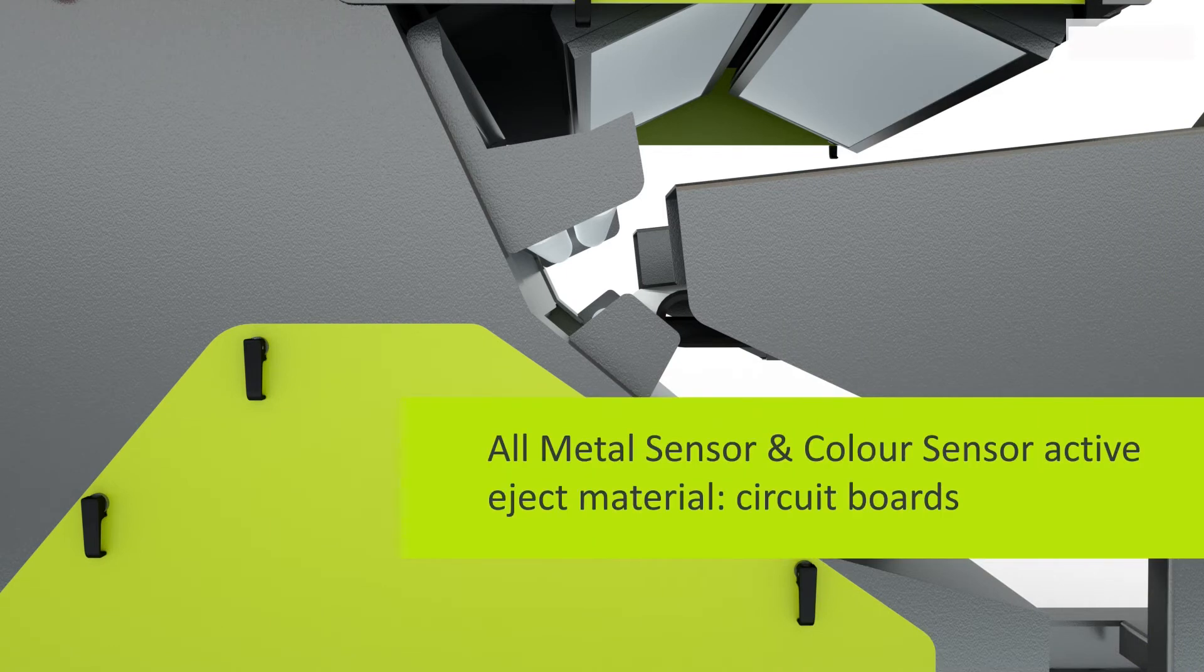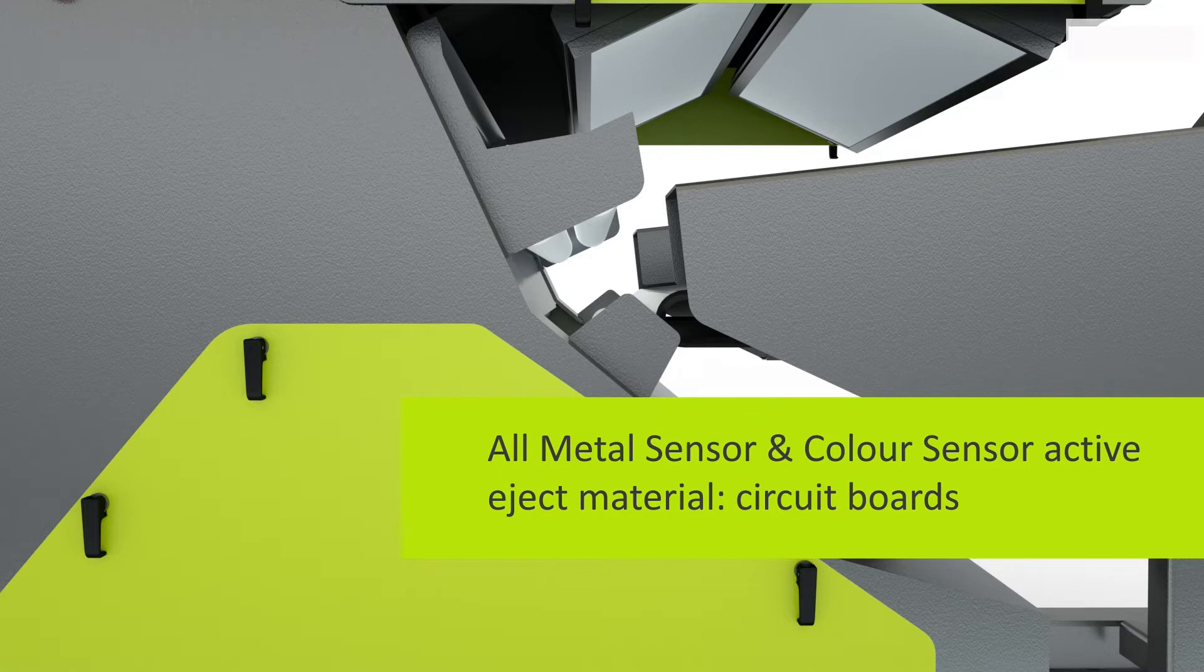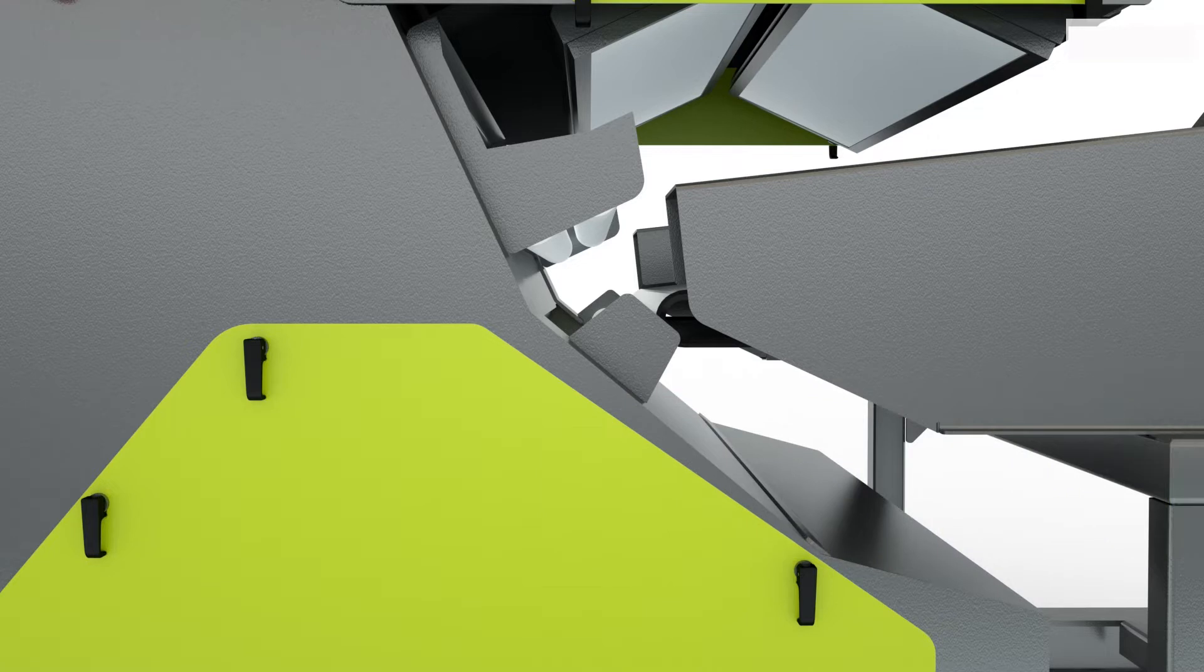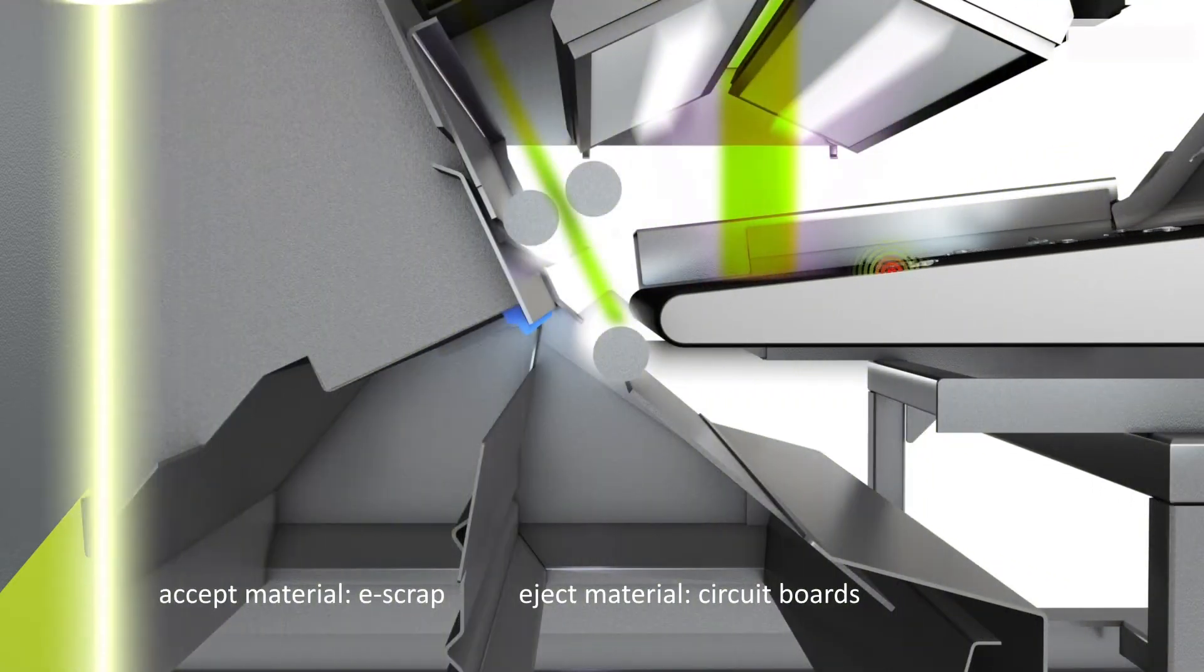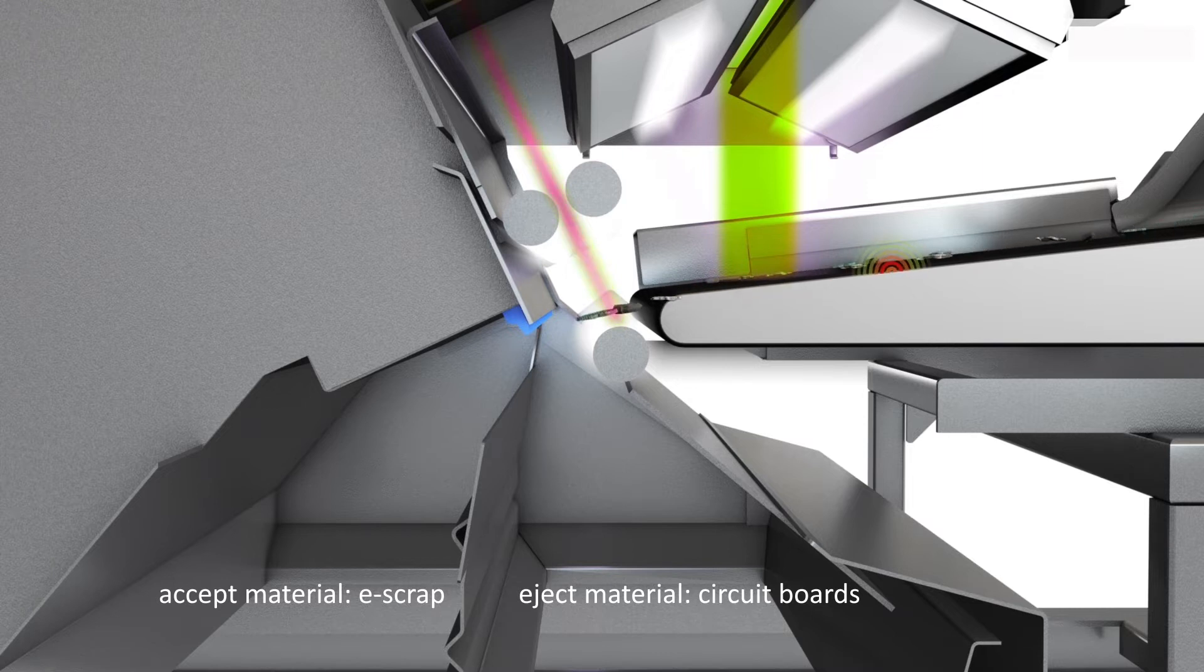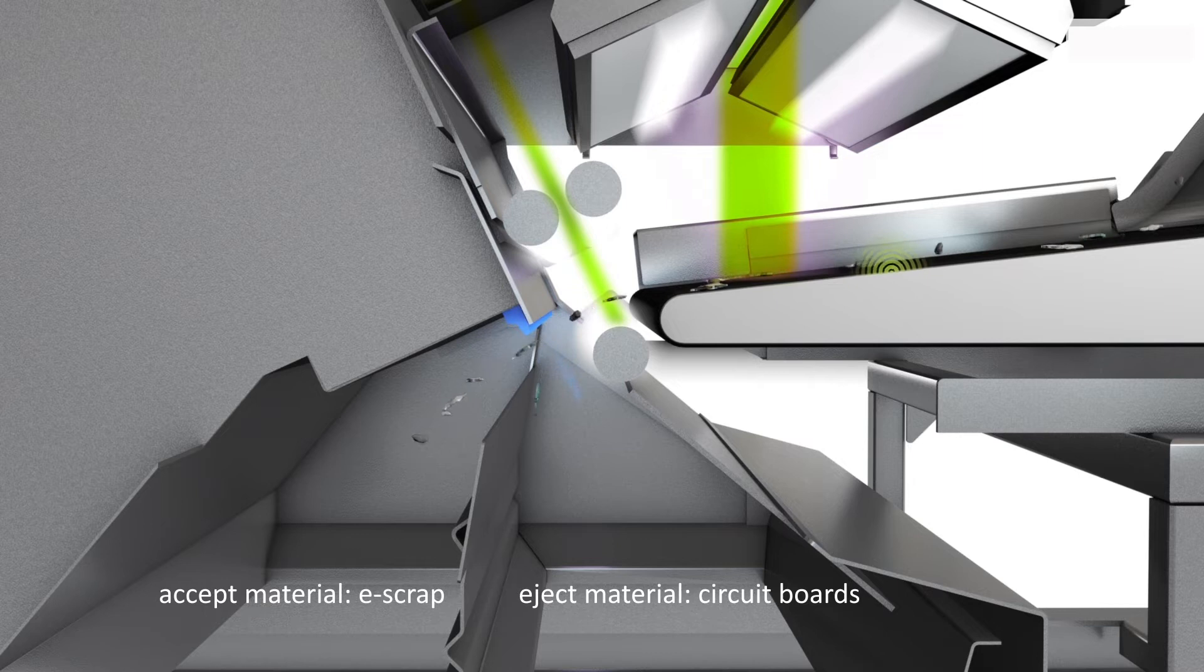In this application, the goal is to separate printed circuit boards from the material stream. Here we use the combination of all-metal detection coil and high-resolution shape and color sensor. Here we can also add the typical colors for printed circuit boards such as green or brownish as criteria. The printed circuit boards are ejected.